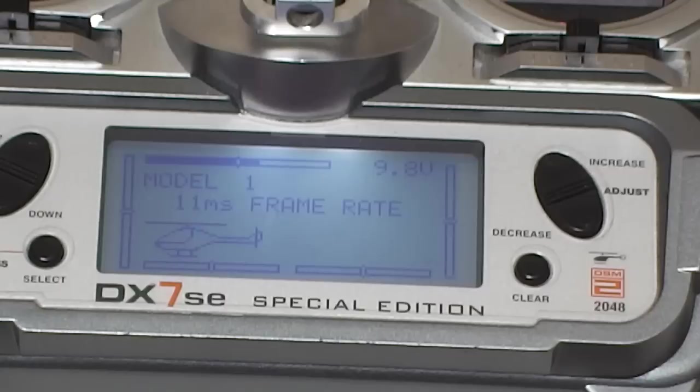So you've got your normal mode, which is normal hovering and very slow moving around. You don't want to do any faster than that in this mode. And then you're going to move to idle up one, which is sports flying, where you can do quite fast forward flight, torque turns, all that sort of stuff. And then idle up two.